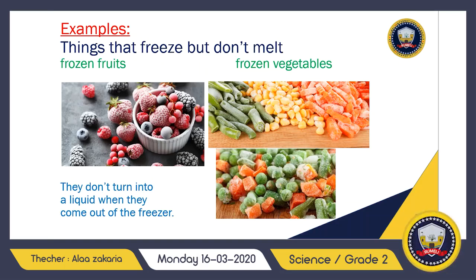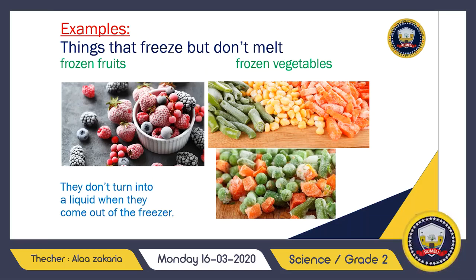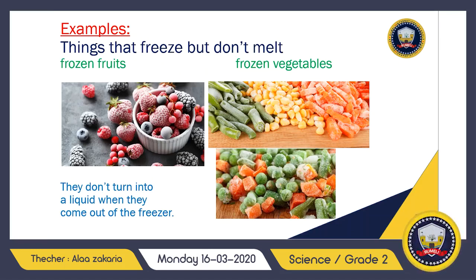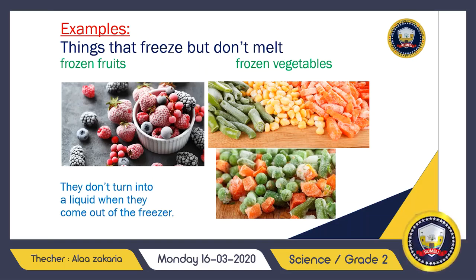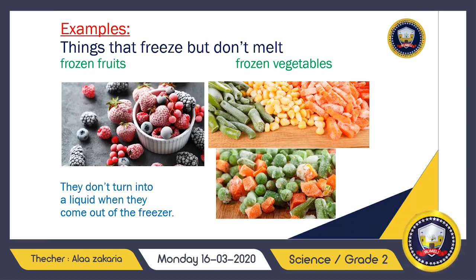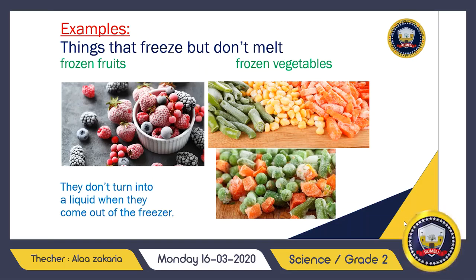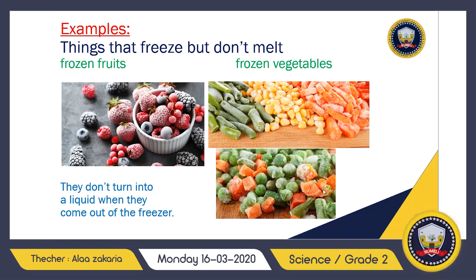So we have examples of things that melt after freezing — like ice cubes, ice pops, and ice cream — and things that freeze but don't melt — like frozen fruits and frozen vegetables. Now ask your mom and search at home for some things that can melt or not after freezing. I hope you enjoyed our lesson for today. See you next lesson and have a good day, bye!